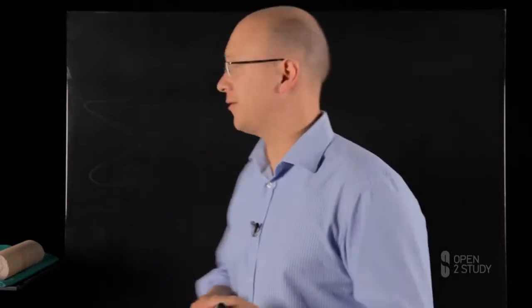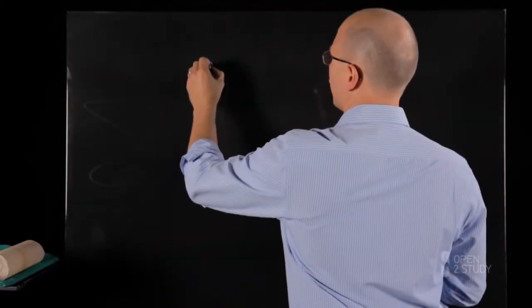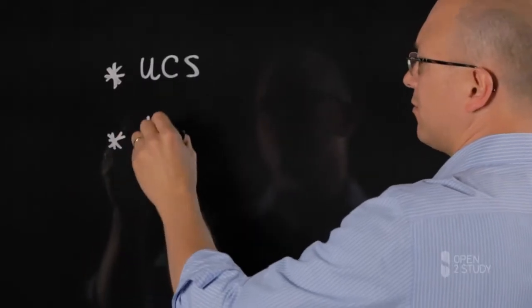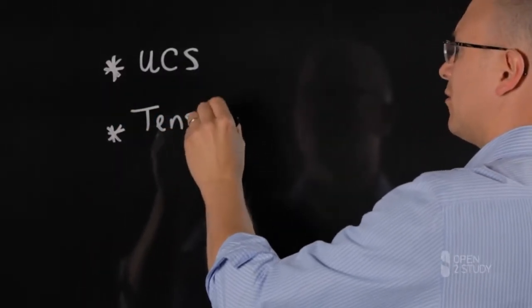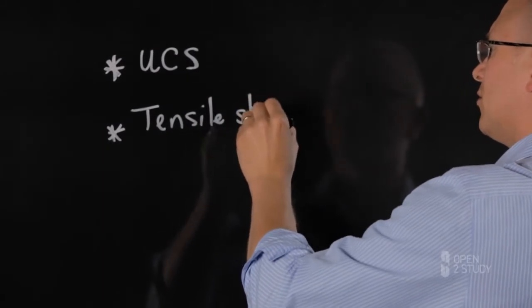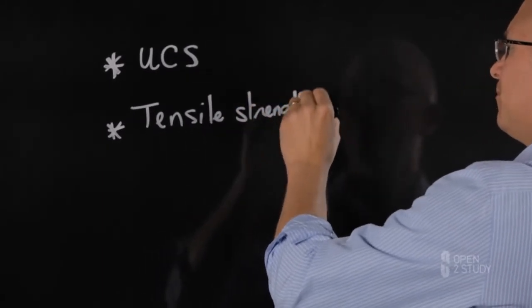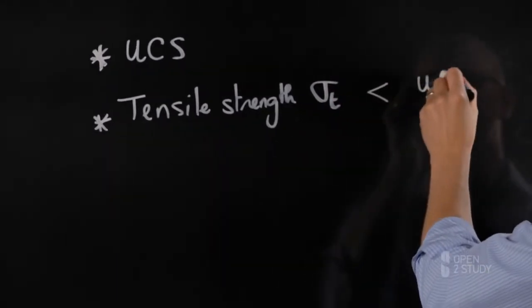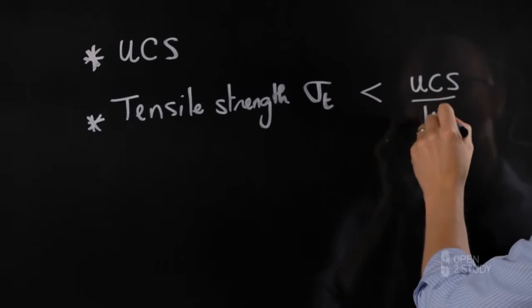So when it comes to the strength of a rock it's usually required to quantify the unconfined compressive strength or UCS, the tensile strength typically noted sigma t. Sigma t is typically lower than about a tenth of the unconfined compressive strength.